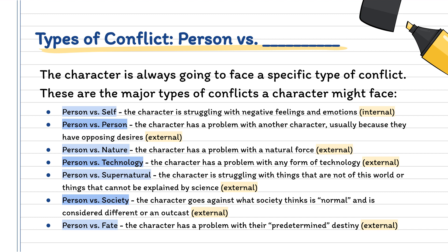Then you have person versus fate. This is when a character has a problem with their predetermined destiny. You normally see this in mythology, especially Greek mythology, and also in tragedies. The character is really trying to go against what has been predetermined for them, and usually they fail because their life has been predetermined and they can't change it.